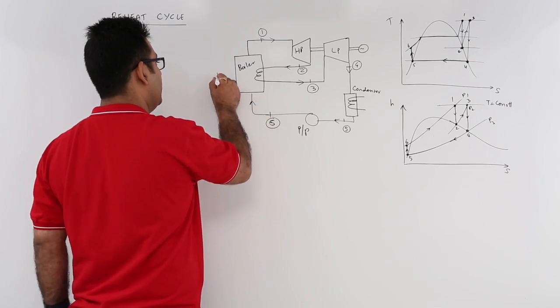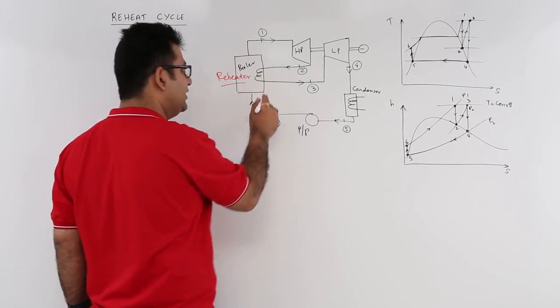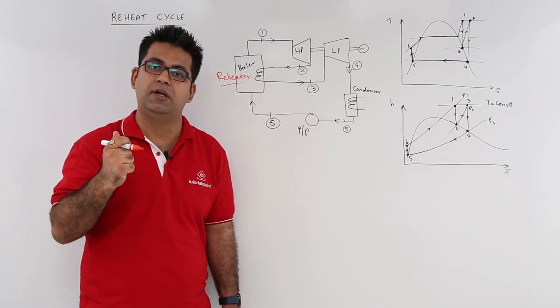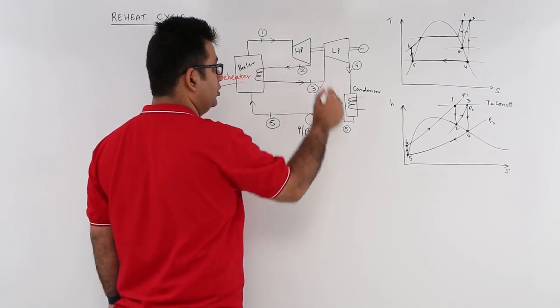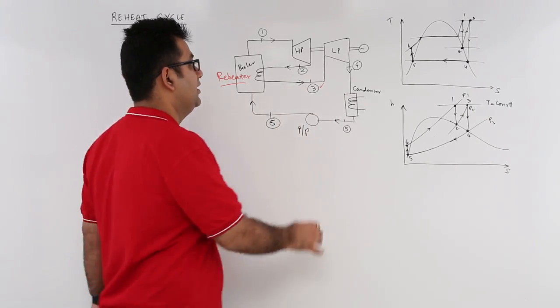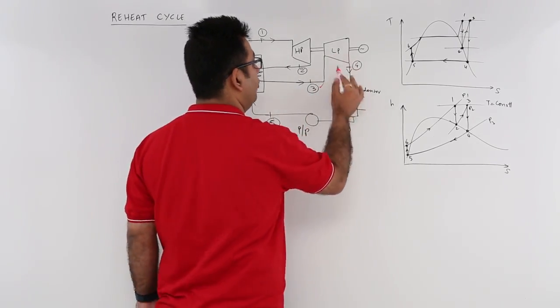The reheater increases the pressure and temperature again to state 3. It then enters into the low pressure turbine and expands further to state 4.